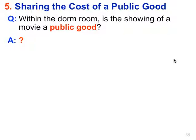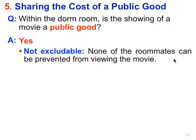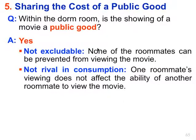The first question asks: in the dorm room, is the showing of a movie a public good? The answer is yes. A public good is not excludable and not rival in consumption. It's not excludable because none of the roommates can be prevented from viewing the movie — they all have the right to be in that room. And it's not rival in consumption: the fact that you're watching the movie doesn't diminish my viewing. One roommate's viewing does not affect or diminish another roommate's ability to view the movie. So it's a public good.